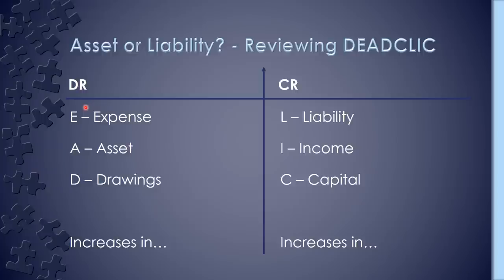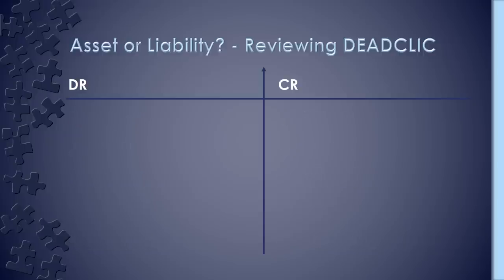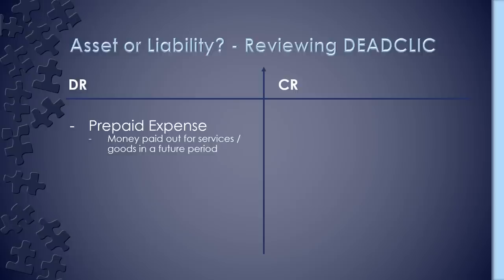So that's our review of DEAD CLIC. Let's look at how it relates to accruals and prepayments — and more importantly, why we debit or credit. Let's look at each one in turn. First, prepaid expenses: as we saw earlier, this is money paid out for services or goods that relate to a future period. That prepaid expense is not relevant to certain periods of the year.